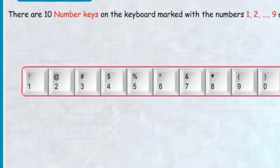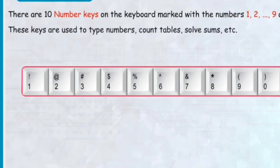There are 10 number keys on the keyboard marked with the numbers 1, 2, 3, 4, 5, 6, 7, 8, 9, and 0. These keys are used to type numbers, count tables, solve sums, etc.